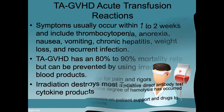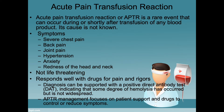Lastly is the acute pain transfusion reaction, or APTR. It's a rare event that can occur during or shortly after transfusion of any blood product, and its cause is not known. Symptoms include severe chest pain, back pain, joint pain, hypertension, anxiety, and redness of the head and neck. It is not life-threatening, but does respond well with drugs for pain and rigors. The diagnosis can be supported with a positive direct antibody test, or DAT, indicating that some degree of hemolysis has occurred, but that hemolysis is not widespread. APTR management focuses on patient support and drugs to control or reduce the symptoms.